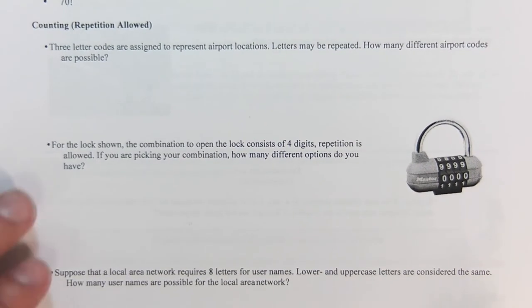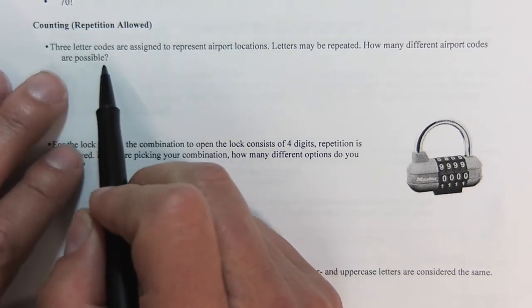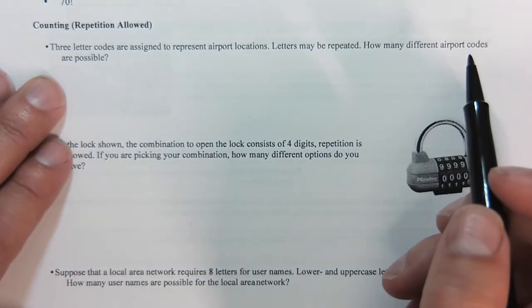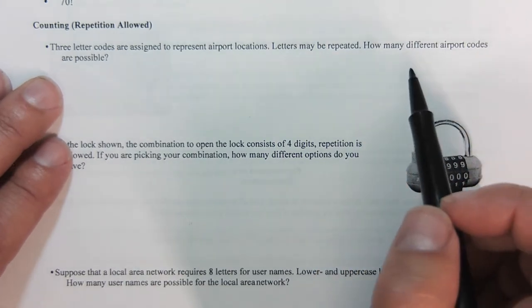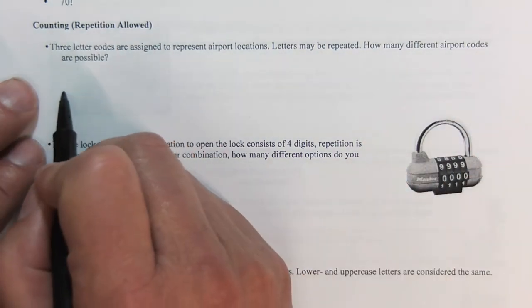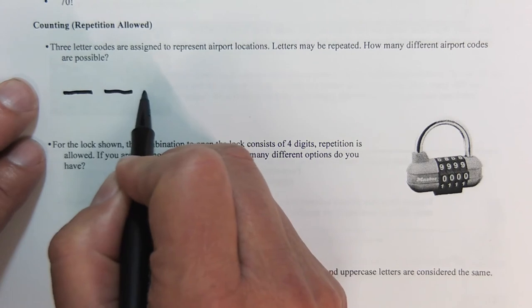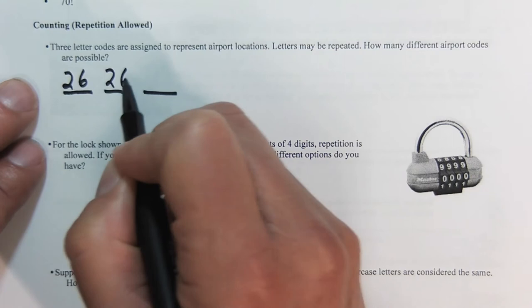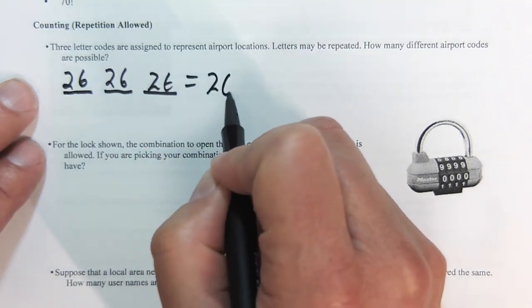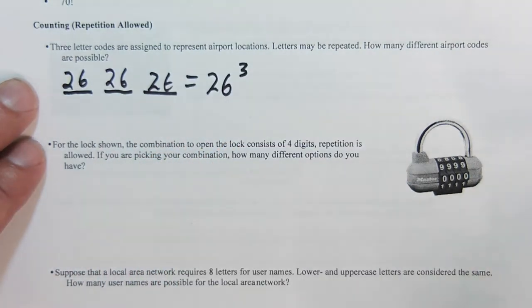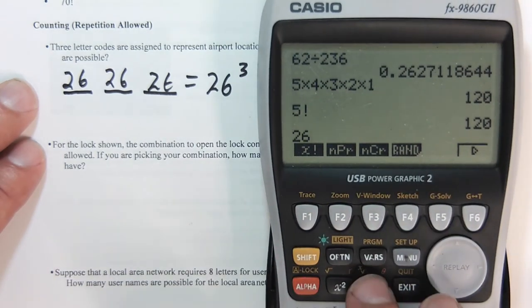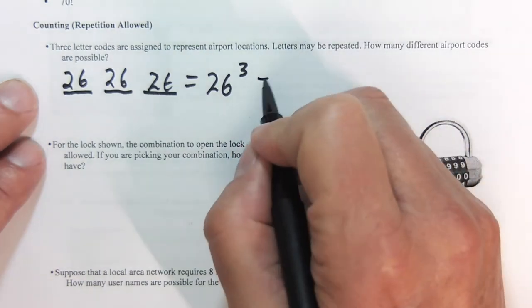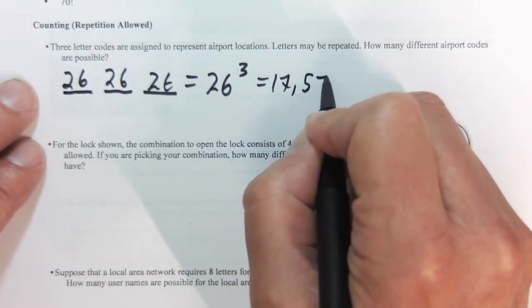Let's move on to some counting where repetition is allowed. Three letter codes are assigned to represent airport locations. Letters may be repeated. How many airport codes are possible? That's like LAX, JFK. This is what they mean by that. So there are three letters that we get, and each one, because we can repeat, there are 26 options, because there's 26 in our alphabet. So this is just 26 to the 3rd power.